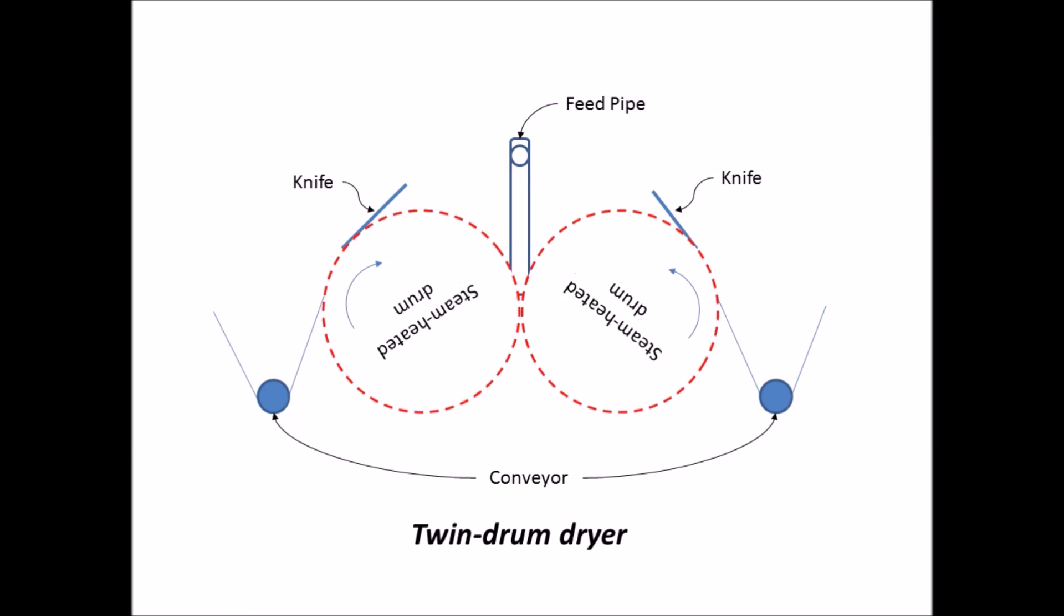A drum dryer consists of one or two steam heated rotating drums. A gas, normally air, may be blown over the surface for quick removal of moisture.